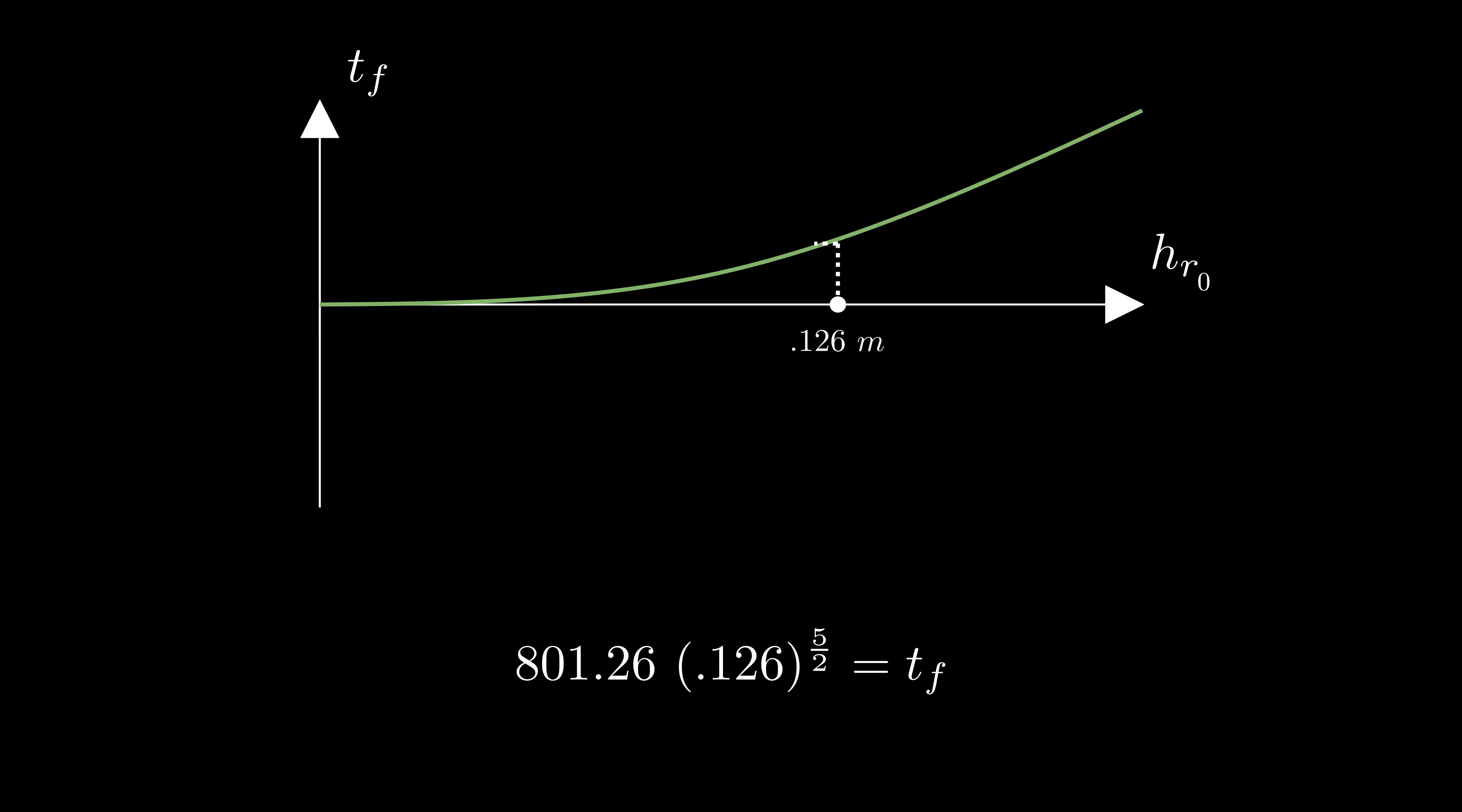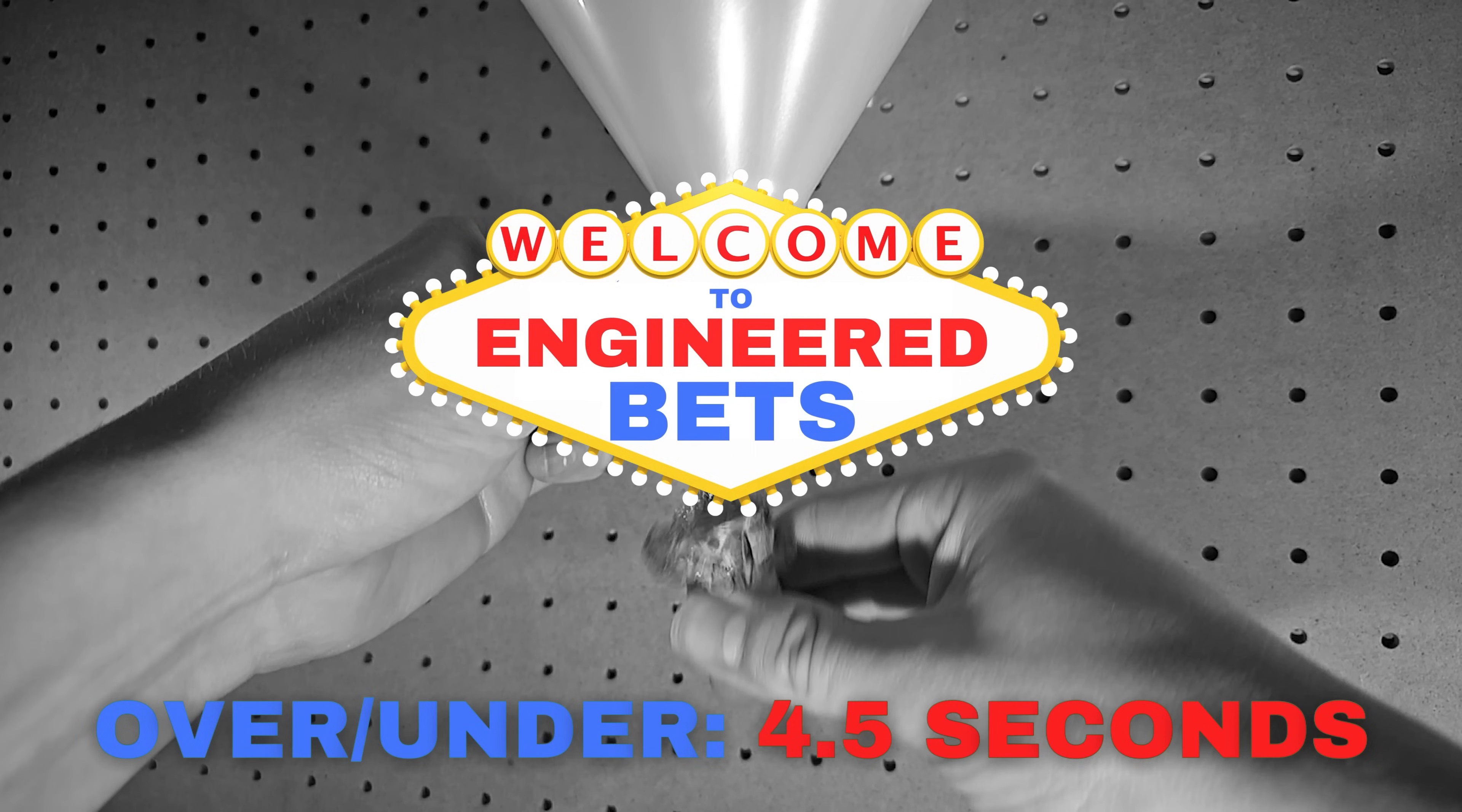Plugging in the initial height for our example where the funnel is filled to the top, and you get that the funnel should drain in about 4.5 seconds, and that's how the line was set. Pause now to predict how reality will vary from this model.